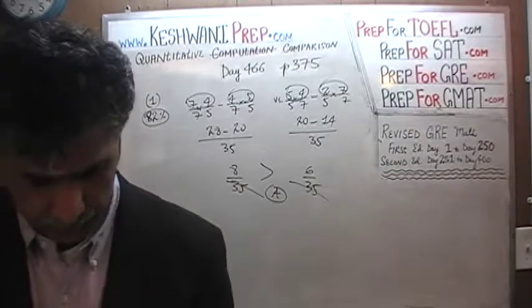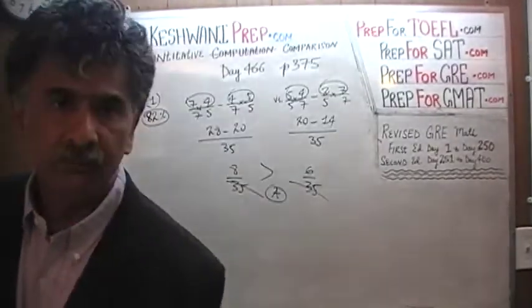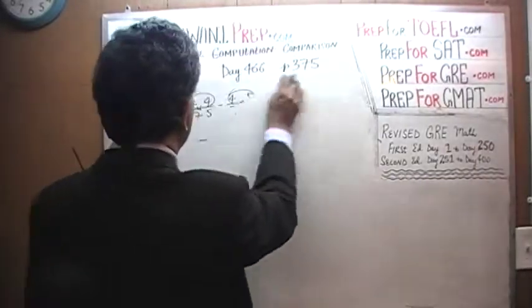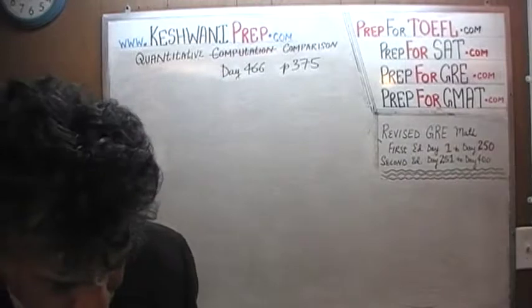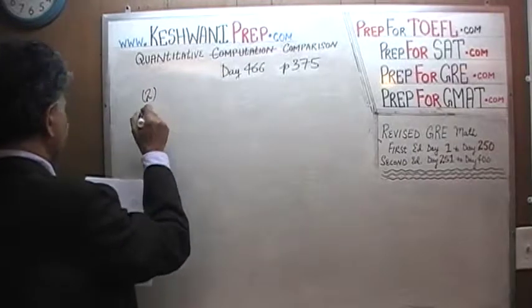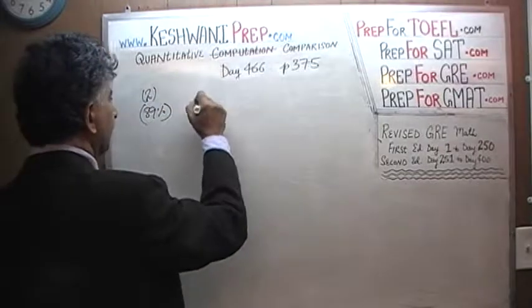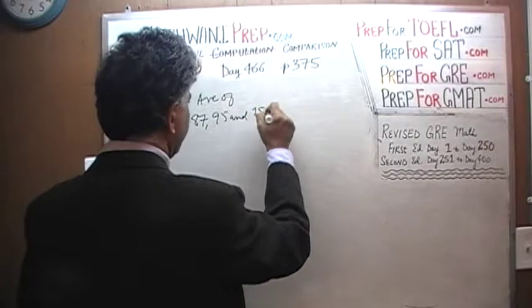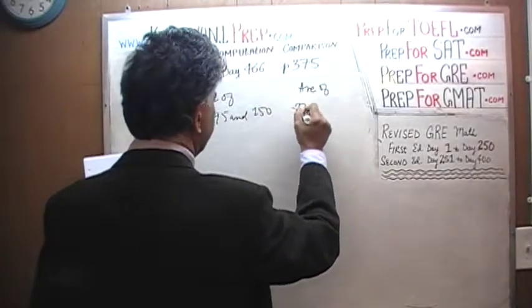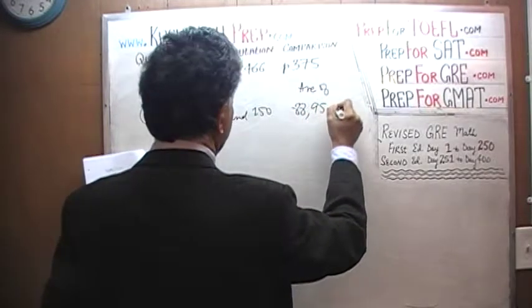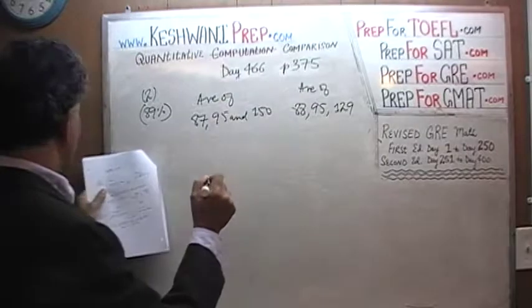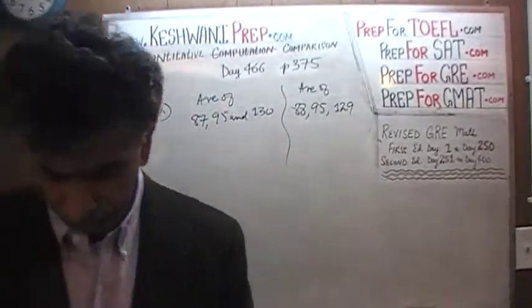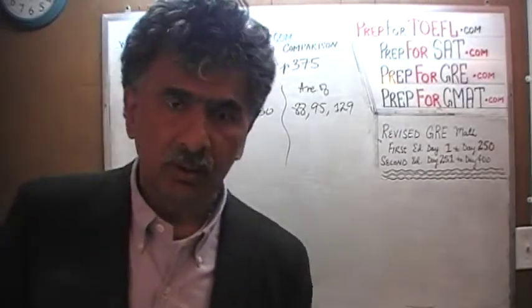Question number 2. 89% of people had no trouble with it. We are being asked to compare the average of 87, 95, and 130 versus the average of 88, 95, and 129. Again, I'll give you 5 seconds to pause and unpause the video — I want you to do the problem yourself and then compare your work against the work that we'll do together.